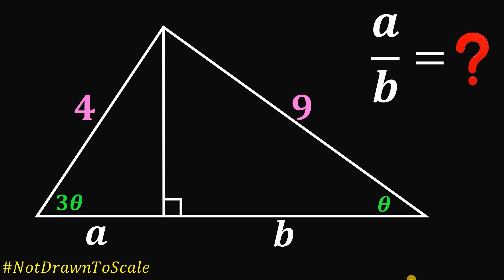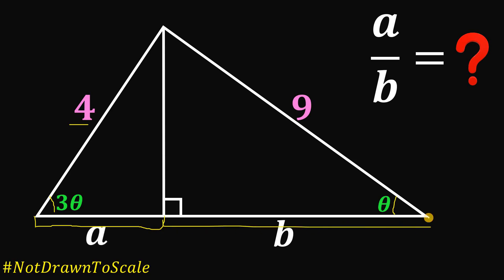Can you solve this geometry challenge? Given a triangle with side lengths of 4 and 9 units, one angle is theta and another is 3 times theta. A length is represented by A and a segment is represented by B. The triangle is not drawn to scale. Our goal is to find the ratio of A and B.